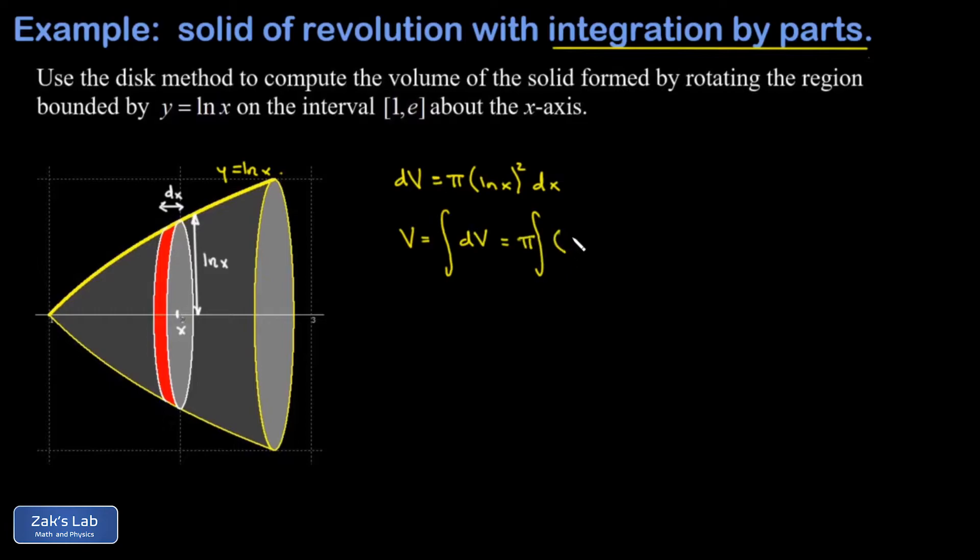I have pi times the integral of natural log all squared dx. We're adding all these disks up as x goes all the way from a lower bound of one to an upper bound of e.